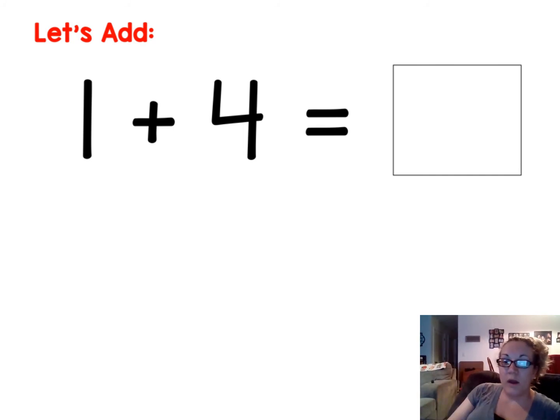So in one plus four, I always start with the bigger number because it's a whole lot easier that way. So four is bigger. So I'm gonna flip it and do four plus one. So I grab my four and I count up one more.